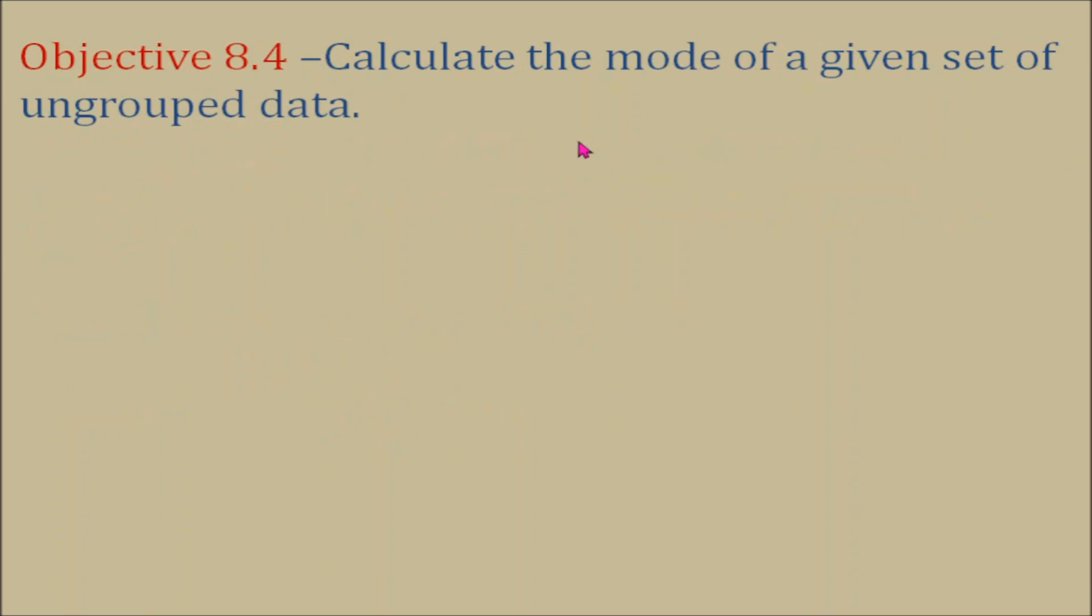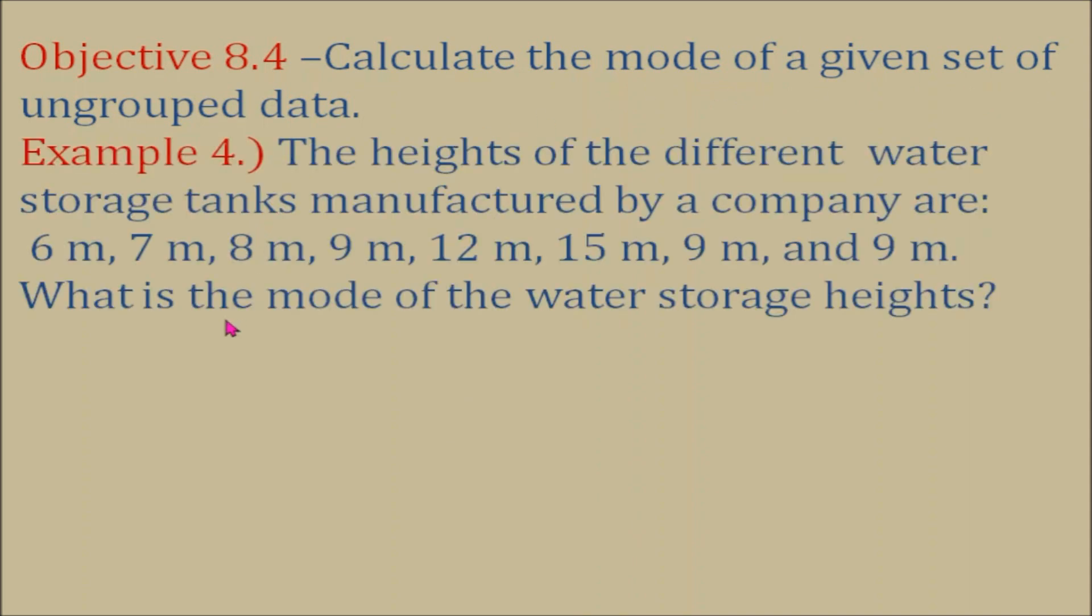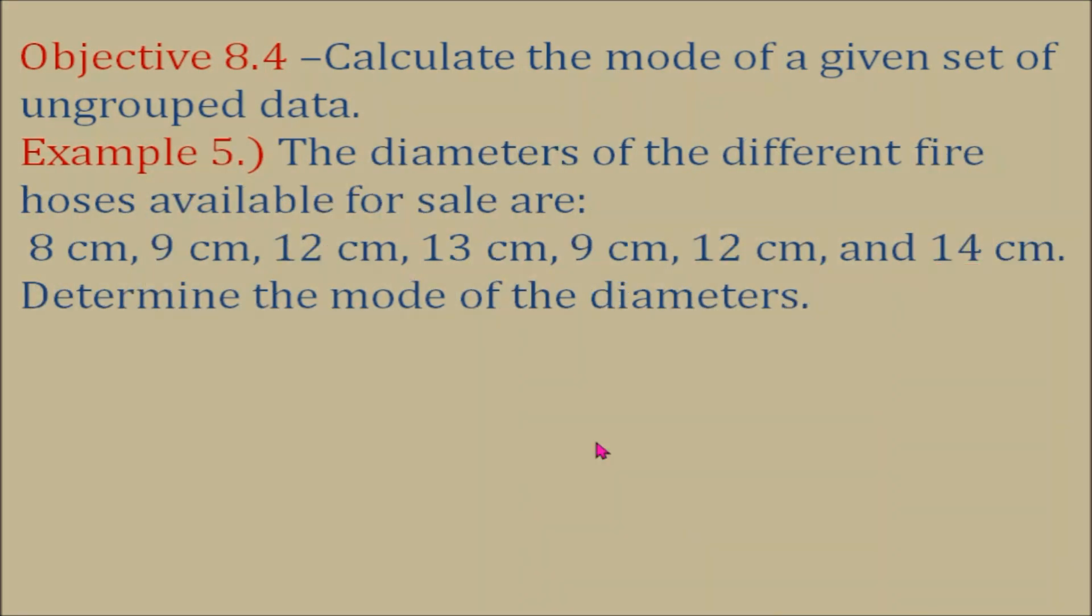Objective number four, calculate the mode of a given set of ungrouped data. Example number four, the heights of the different water storage tanks manufactured by a company are 6 meters, 7 meters, 8 meters, 9 meters, 12 meters, 15 meters, 9 meters, and 9 meters. What is the mode of the water storage heights? Notice here that 9M is the most occurring height. So, that means the mode is 9M.